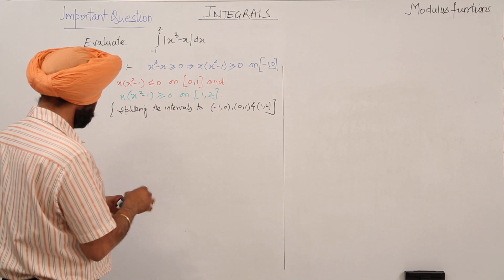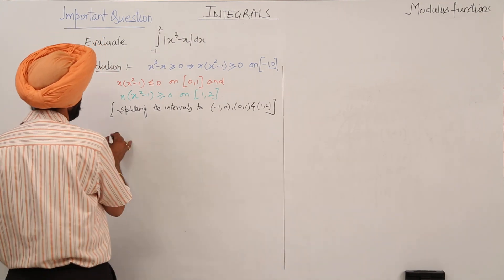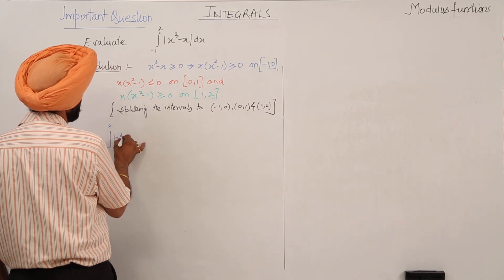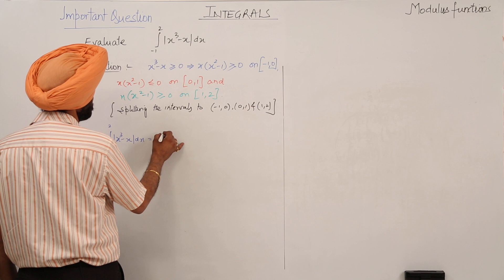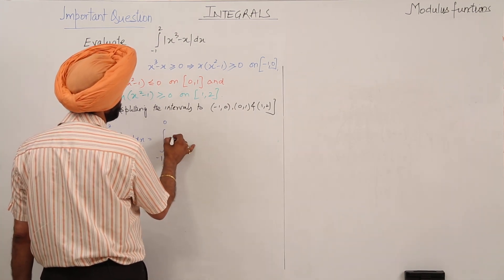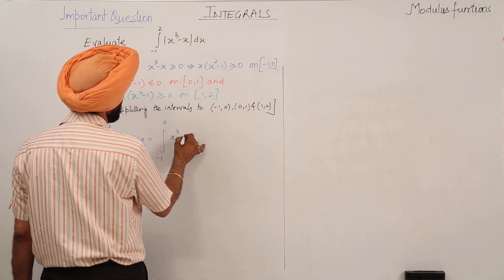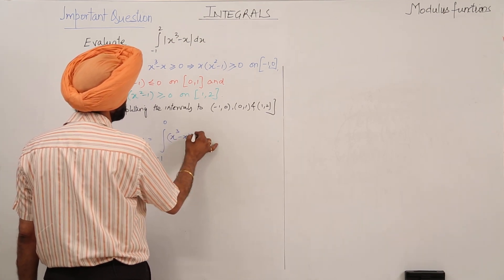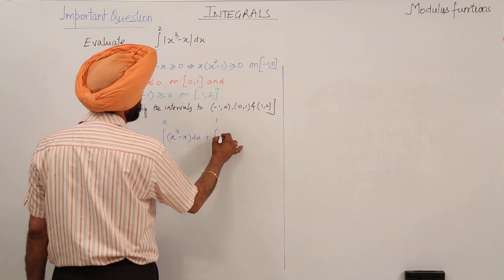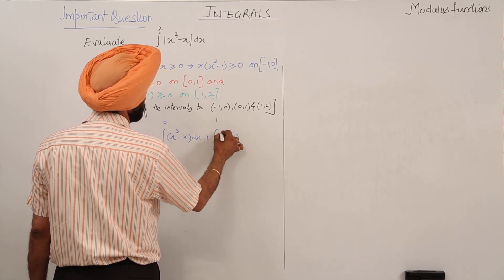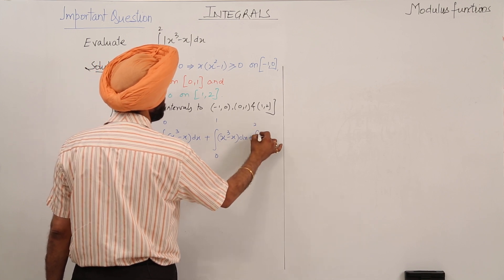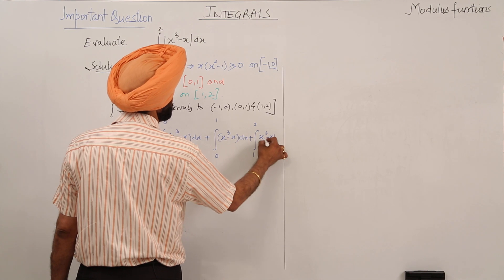Now the question becomes: the integral from -1 to 2 of |x³ - x| dx equals the integral from -1 to 0 of (x³ - x) dx, plus the integral from 0 to 1 of (x³ - x) dx, plus the integral from 1 to 2 of (x³ - x) dx.